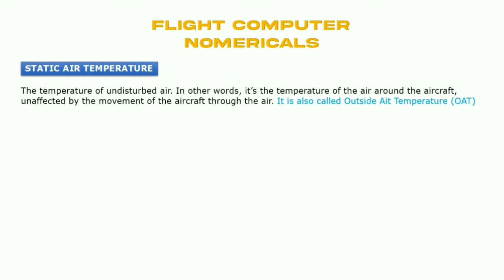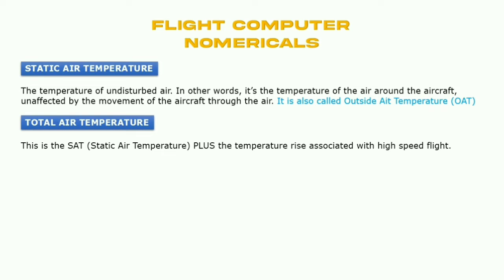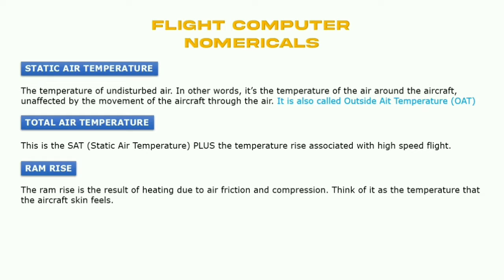Static air temperature is the temperature of undisturbed air — in other words, it's the temperature of the air around the aircraft unaffected by the movement of the aircraft through the air. It is also called outside air temperature. Total air temperature is static air temperature plus the temperature rise associated with high speed flight, known as ram rise. Ram rise is the result of heating due to air friction and compression — think of it as the temperature that the aircraft skin feels.